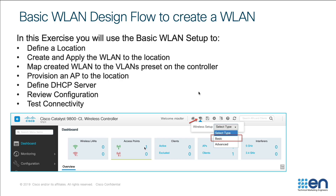In this exercise, we're going to follow the steps defined here to set up a basic WLAN. We're going to start by defining a location, then create and apply a WLAN to that location. We're going to map the created WLAN to the VLANs already preset on the controller, then provision an AP that's also already connected to this controller to that WLAN. Then we're going to define the DHCP server for the wireless clients and review this configuration. Finally, we're going to test connectivity with a wireless client in a remote connection.